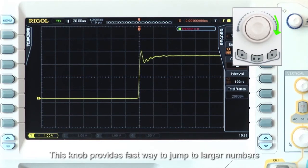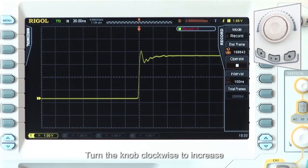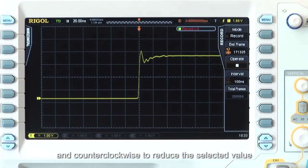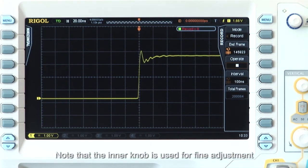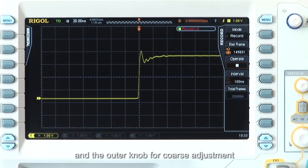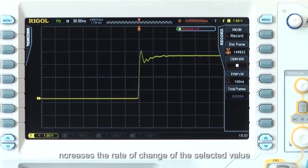This knob provides the fastest way to jump to larger numbers. Turn the knob clockwise to increase and counterclockwise to reduce the selected value. Note that the inner knob is used for fine adjustment and the outer knob for coarse adjustments. More rotation on the outer knob increases the rate of change of the selected value. Now set the end frame to 200,000.